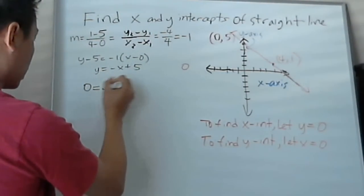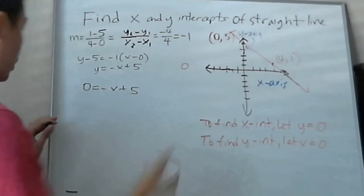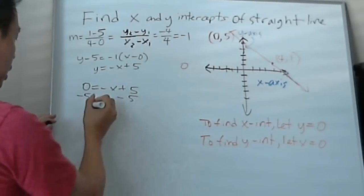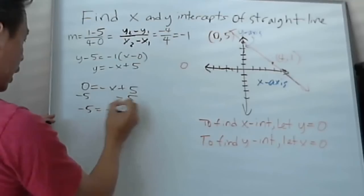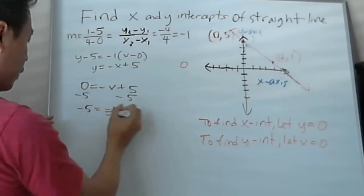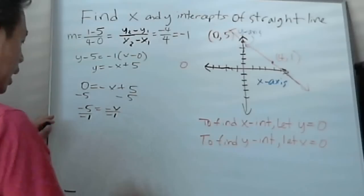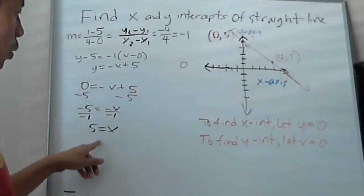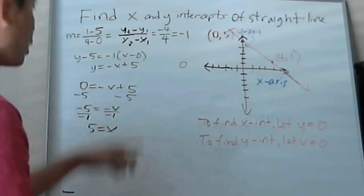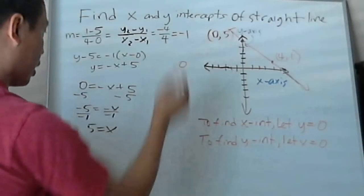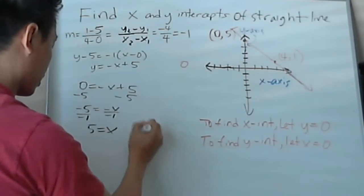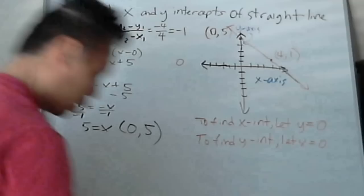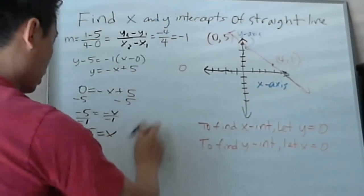0 equals negative x plus 5. Then you solve for x. Subtract 5 on both sides, and you get negative 5 equals negative x. Then you divide by negative 1, and you get x equals 5. So the point where it crosses the x-intercept will be 5, 0. Oops, I mean 5, 0, my bad.